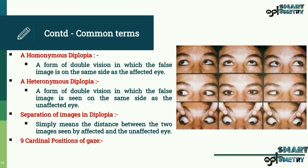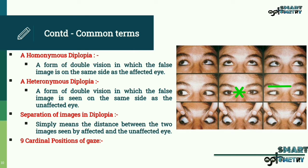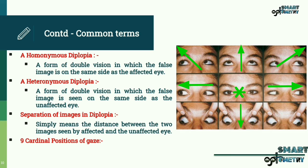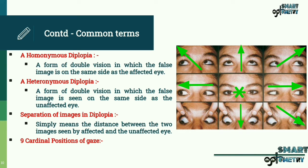Nine cardinal positions of gaze. The nine gazes are: straight ahead, left, right, straight up, up and to the left, up and to the right, straight down, down and to the left, and down and to the right.